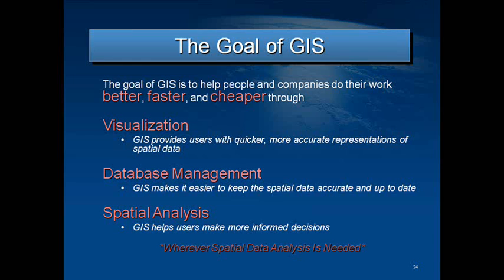Just to reiterate what we've already looked at, the goal of GIS is to help people and companies do their work better, faster, and cheaper through visualization — the maps — database management, attribute tables, doing specific queries, and spatial analysis, which we've looked at with the Dr. Snow example.